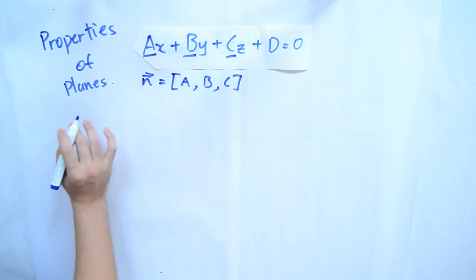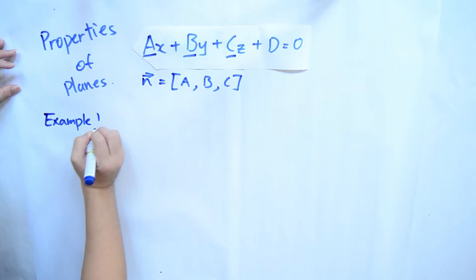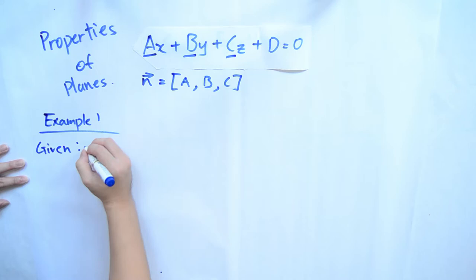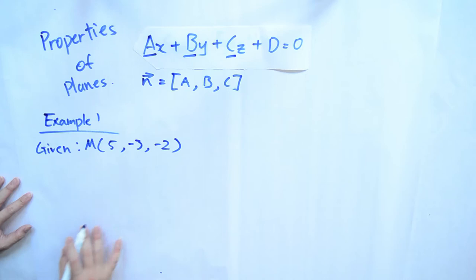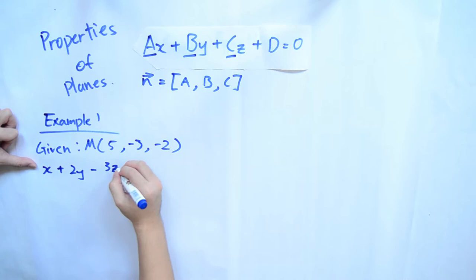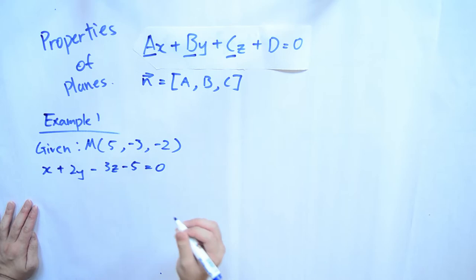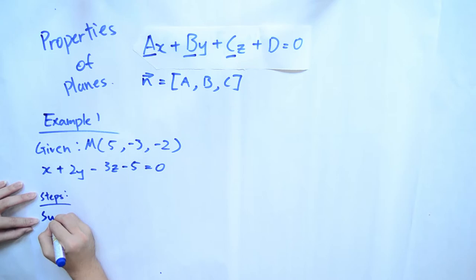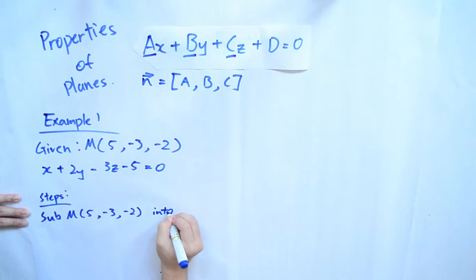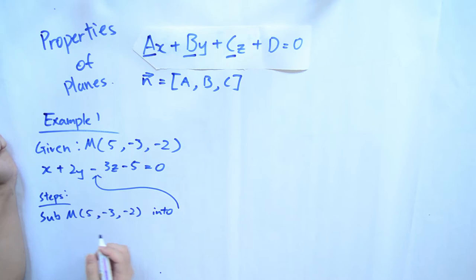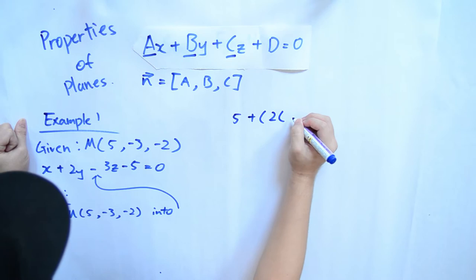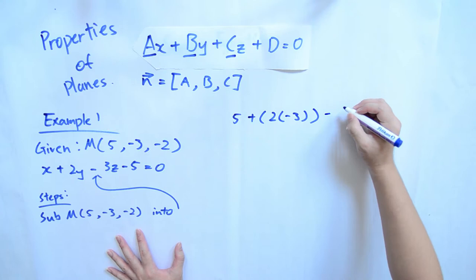If a given point m has coordinates x equals 5, y equals negative 3, and z equals negative 2, and the given plane equation is x plus 2y minus 3z minus 5 equals 0, the question asks us to determine if point m lies on the plane. To do that, we substitute the given point into ax plus by plus cz plus d equals 0. So a equals 5, b equals negative 3, and c equals negative 2.